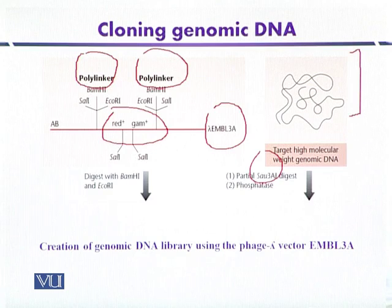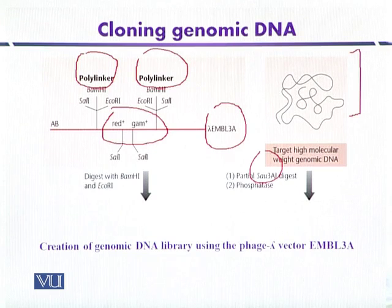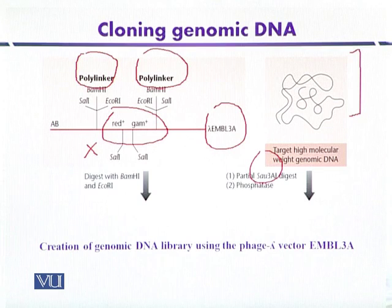When the red+ and gam+ region is intact, Lambda EMBL3A cannot infect the P2 lysogen of E. coli, and no plaques are formed — indicating that foreign DNA has not been ligated. Whereas if this region is deleted, then Lambda EMBL3A will be able to infect the P2 lysogen strain of E. coli.